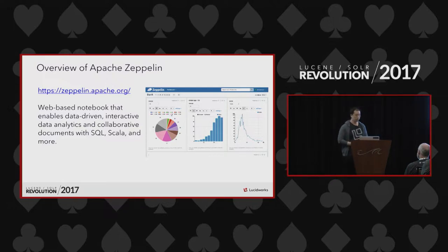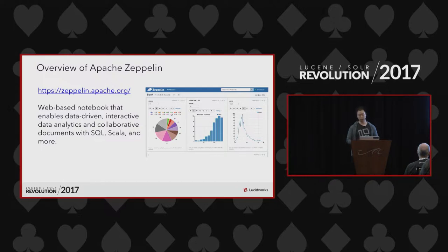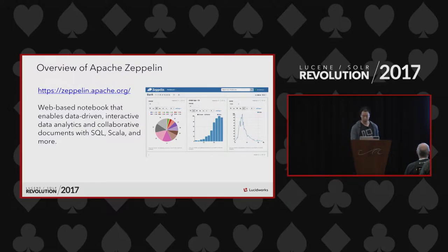With Zeppelin, you're not limited to just one language on the backend. You can actually use SQL Scholar, which is really Spark-centric, to do computation. Out of the box, Zeppelin supports different languages — most of the popular ones like Cassandra, R, and Hive.